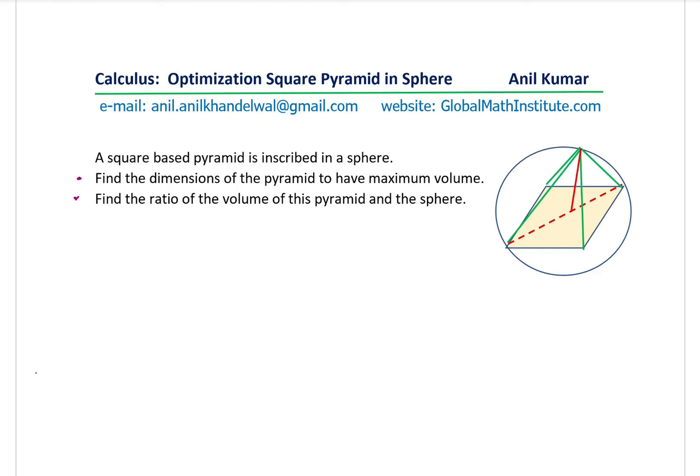The question here is: a square-based pyramid is inscribed in a sphere. Find the dimensions of the pyramid to have maximum volume. Find the ratio of the volume of this pyramid and the sphere.